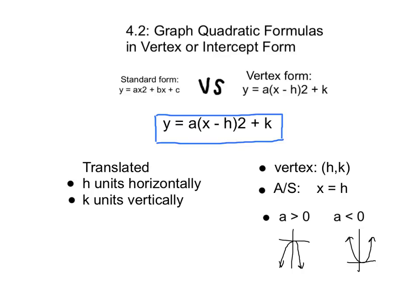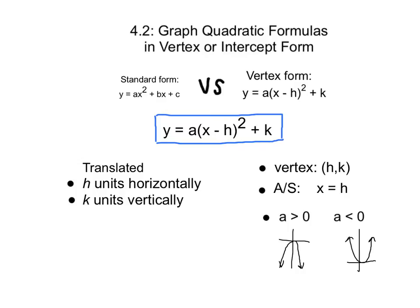Section 4.2 is titled 'Graph Quadratic Functions in Vertex or Intercept Form.' As a reminder, standard form is ax squared plus bx plus c. Now we move to vertex form, which is y equals a times the quantity x minus h, squared, plus k, where (h, k) is the vertex. The graph is translated h units horizontally and k units vertically. The axis of symmetry is x equals h. As in standard form, if a is greater than 0 the graph opens up; if a is less than 0, it opens down.